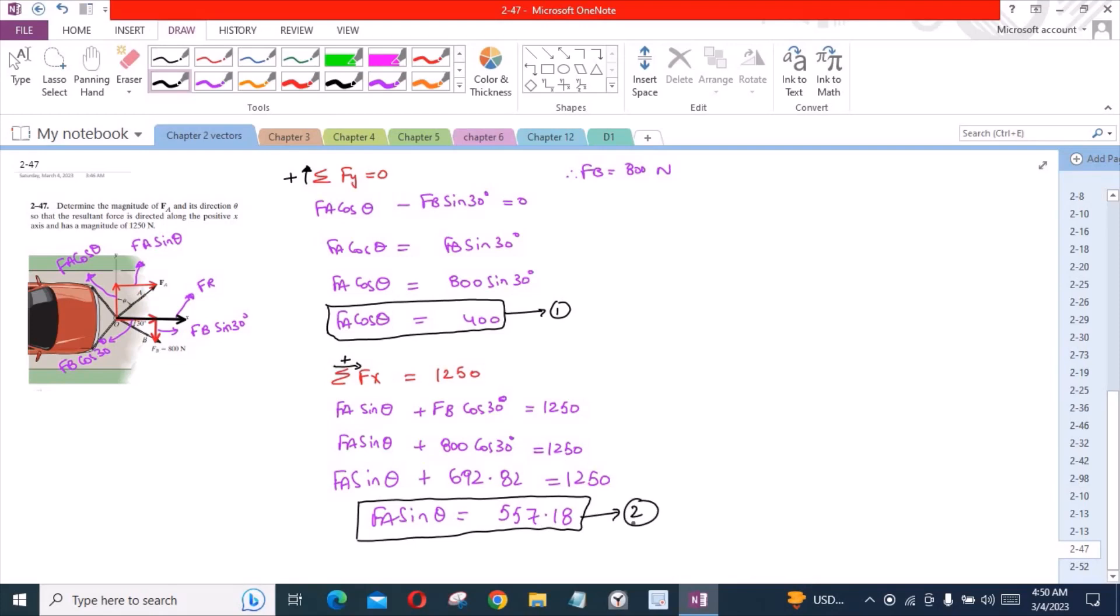So now we have two equations and two unknowns. So now we could easily manipulate them and solve for Fa and the angle theta. Let's divide equation 2 by equation 1. So we have Fa sin theta over Fa cos theta equals 557.18 divided by 400.